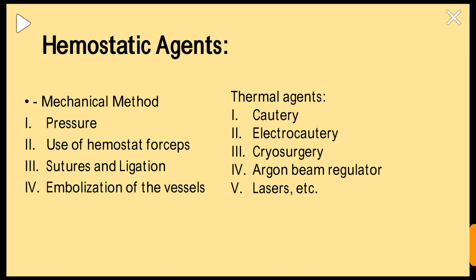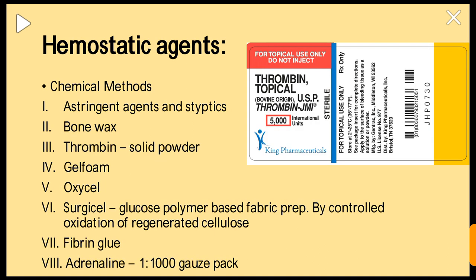Thermal agents include cautery, electrocautery, cryosurgery, argon beam coagulator, and laser systems. Chemical and hemostatic agents include topical thrombin 5000 units, astringent agents, styptics, bone wax, gelatin sponge (Oxycel or Gelcel), and fibrin glue. Adrenaline 1:1000 gauze pack is also used as a topical agent.